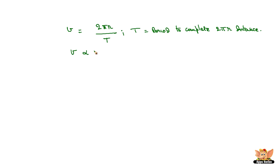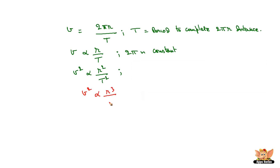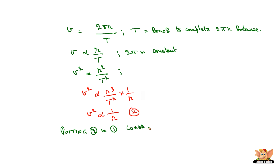Hence, v is proportional to r/T, where 2π is a constant. Squaring both sides, v² is proportional to r²/T². Multiplying and dividing the right-hand side by r, v² is proportional to r³/T² × 1/r. Newton used Kepler's third law, wherein r³/T² is a constant, so v² is proportional to 1/r — let us call this equation number two.